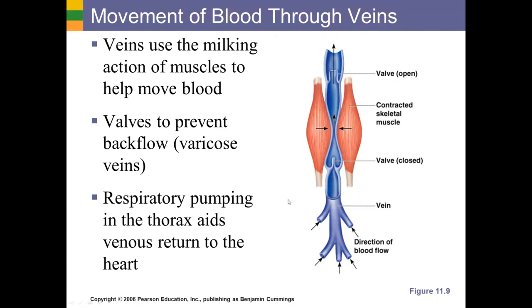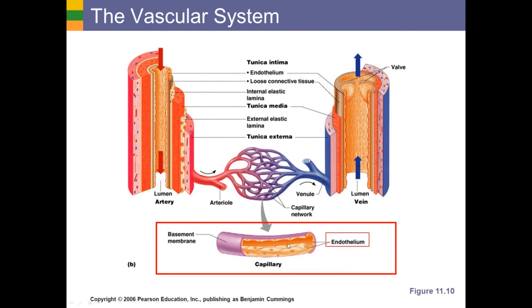Lastly, for veins in the thoracic cavity bringing blood close to the heart, there is what's called a respiratory pump. As you inhale, pressure in your thoracic cavity drops and pressure in your abdominal cavity increases, which helps drive blood from the more inferior portions of the body — the abdomen specifically — toward the veins of the thoracic cavity. As you inhale and exhale, that pressure change helps drive blood toward the heart. Those are the three mechanisms that help move blood through veins: valves, milking by skeletal muscles, and the respiratory pump.